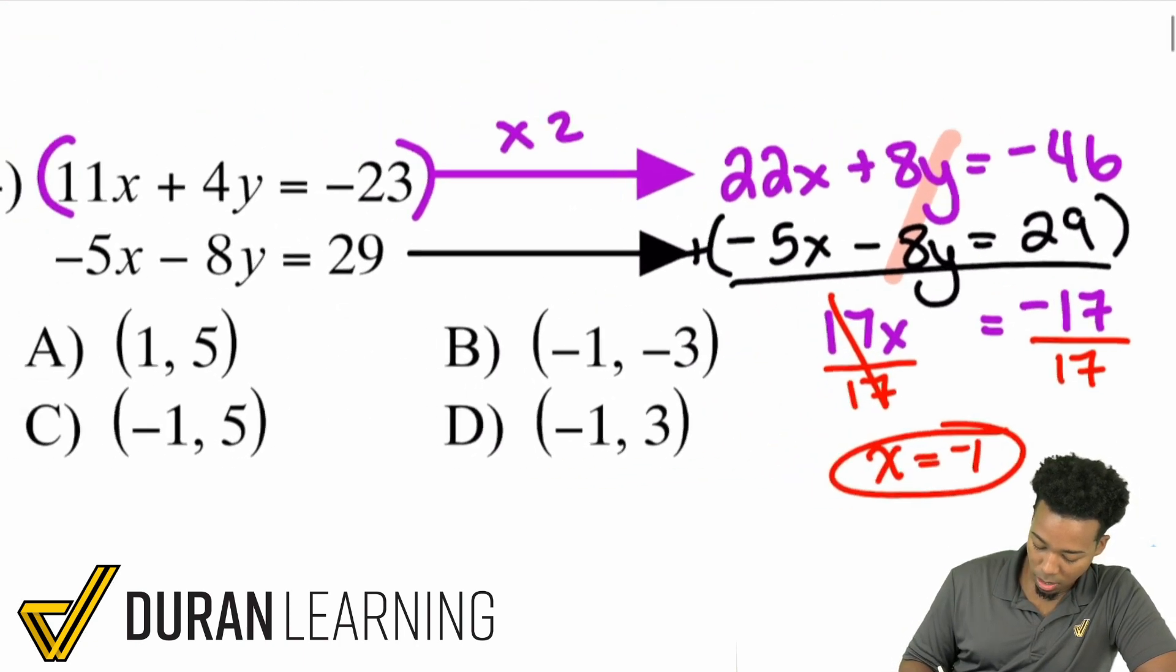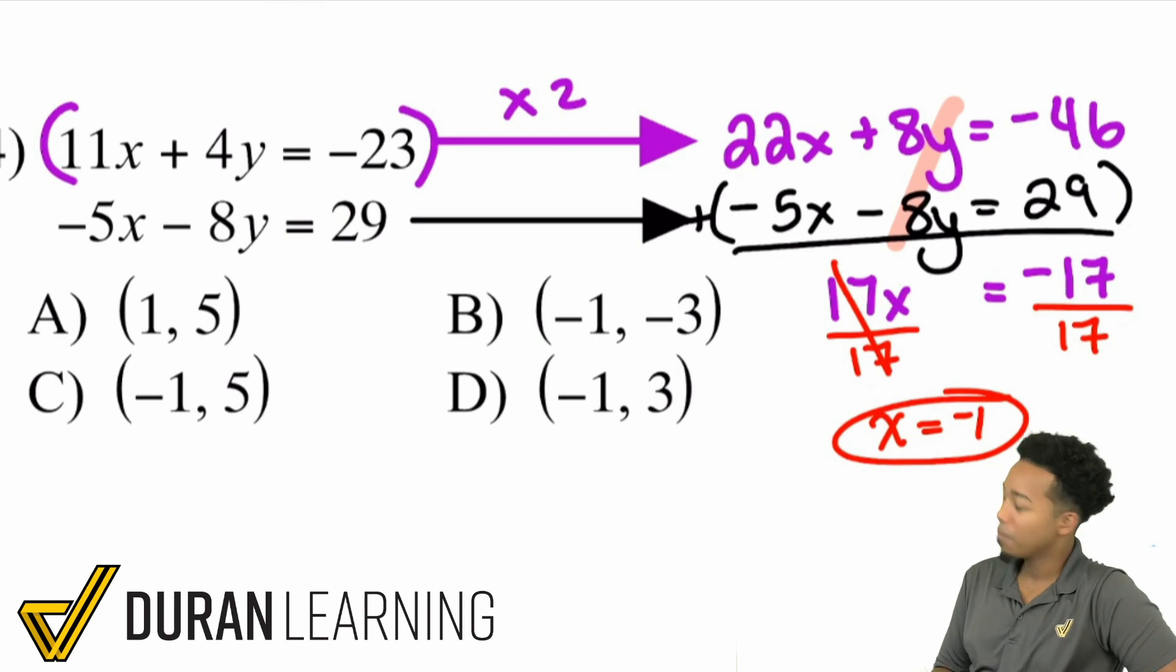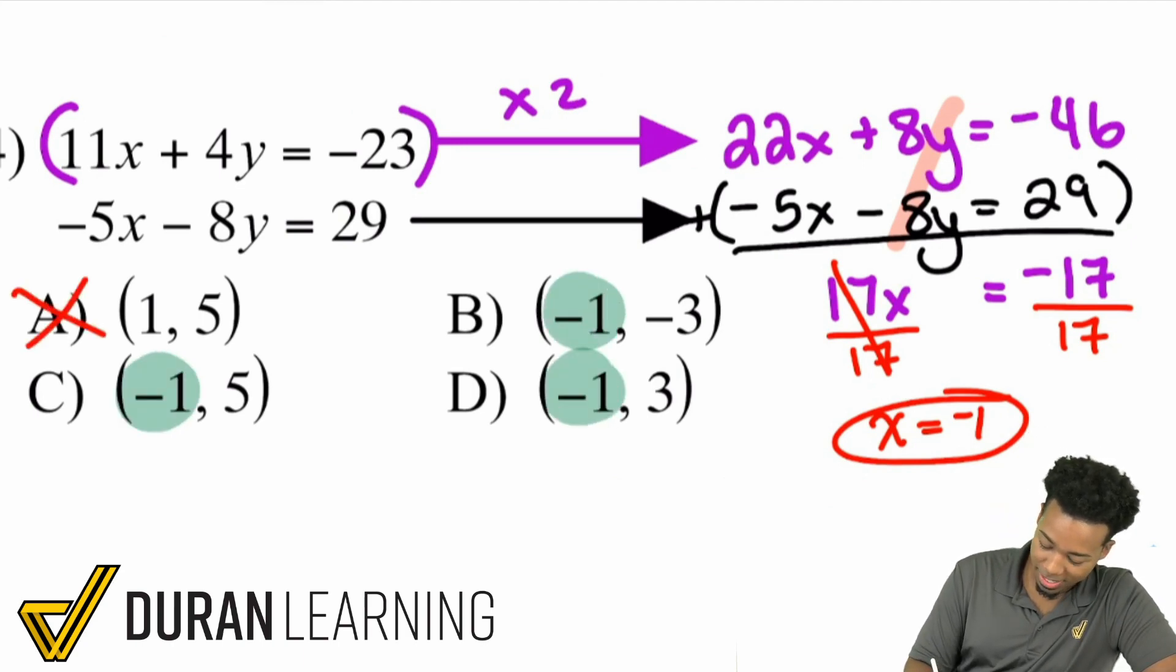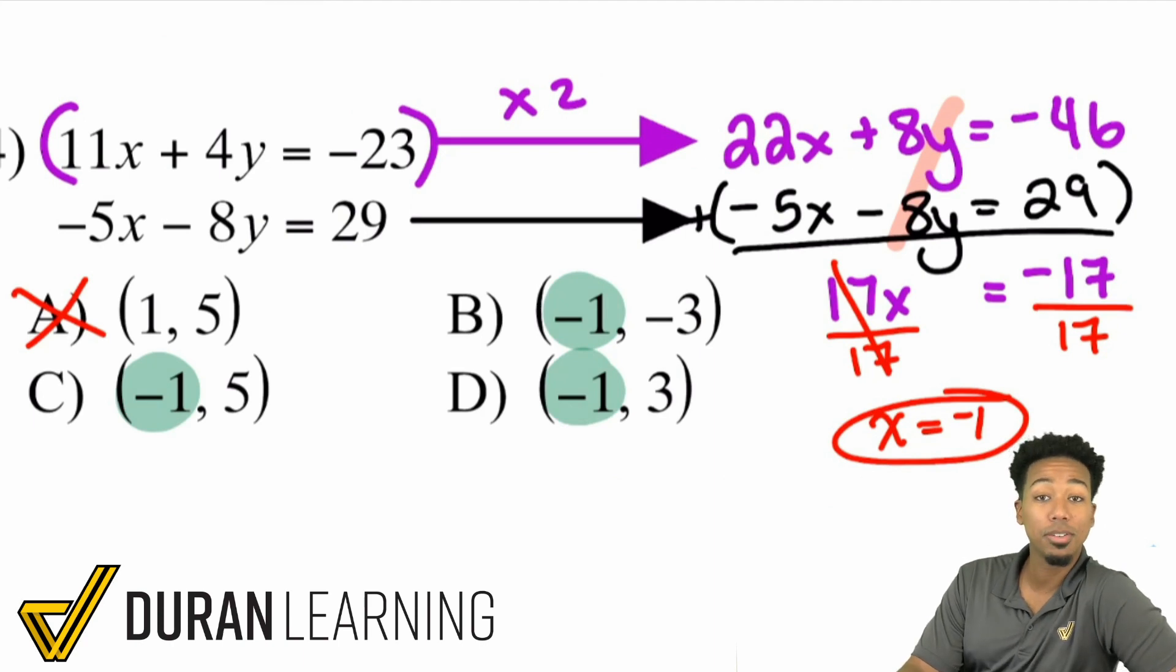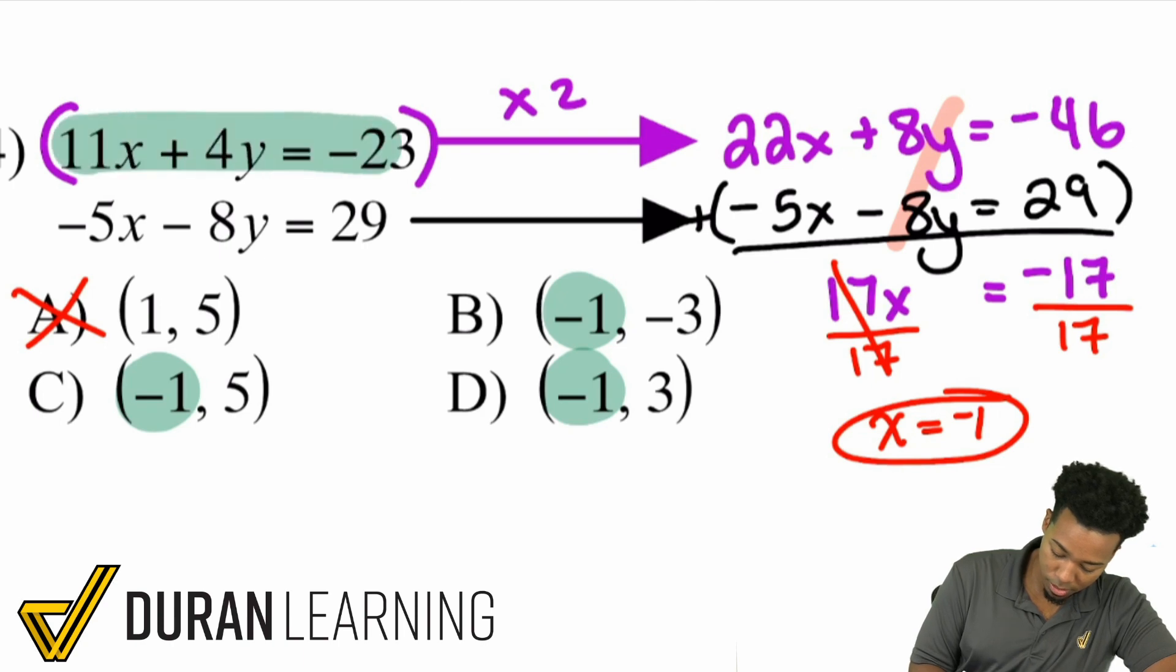We are good. Nope, not yet, because look at this. We have A not being it, but we have C, B, and D all having negative 1 for x. And so in this question, what we'll have to do, we'll plug the x back in to any equation, solve it, and we're done. I'll just go ahead and pick the first one here, and plug that right in.